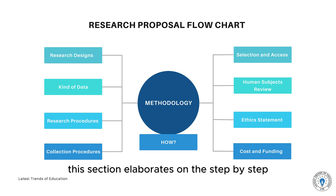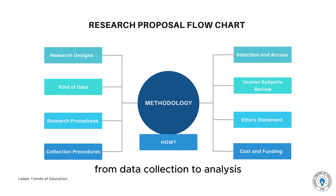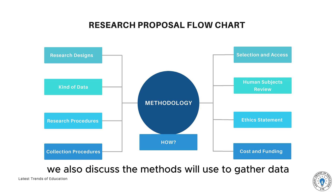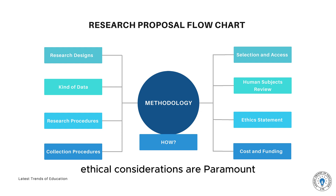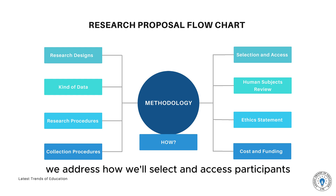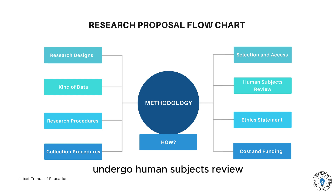This section elaborates on the step-by-step processes involved in our research, from data collection to analysis. We also discuss the methods we'll use to gather data. Ethical considerations are paramount — we address how we'll select and access participants and ensure the ethical integrity of our research.